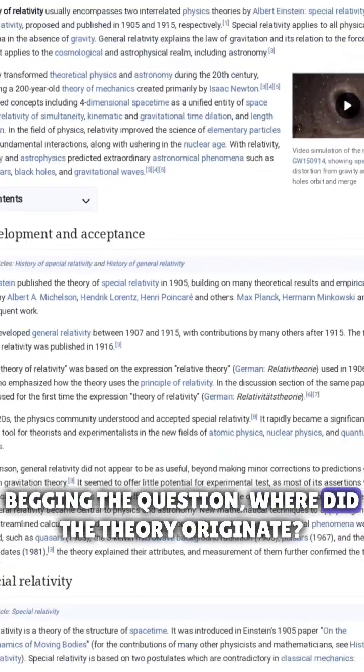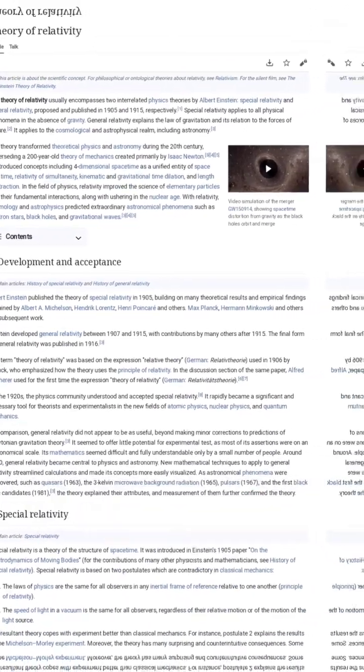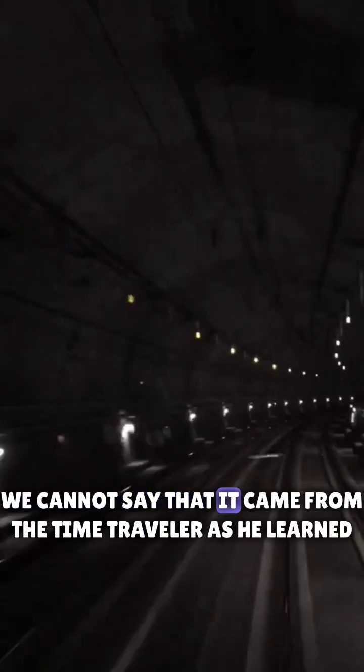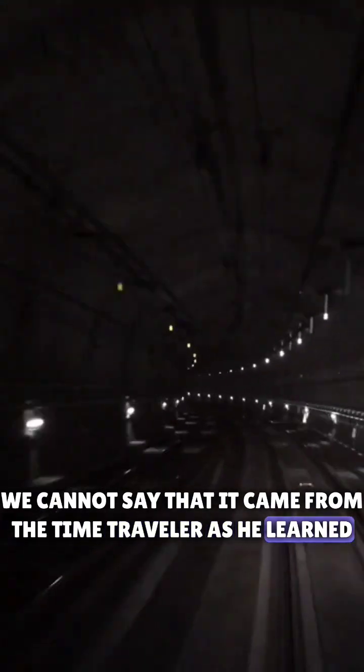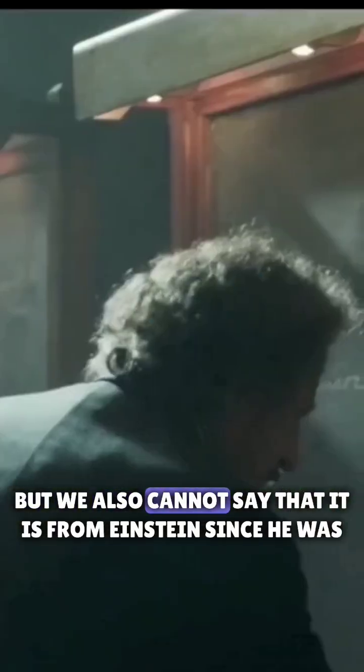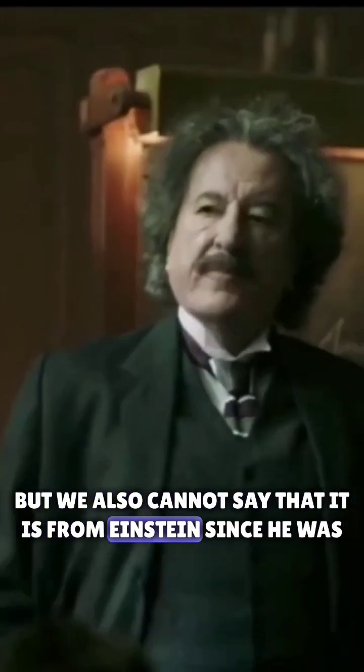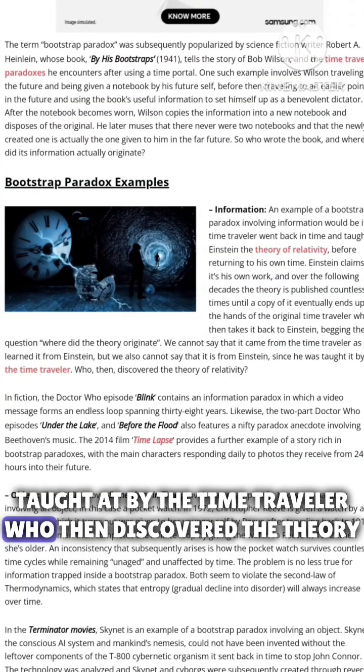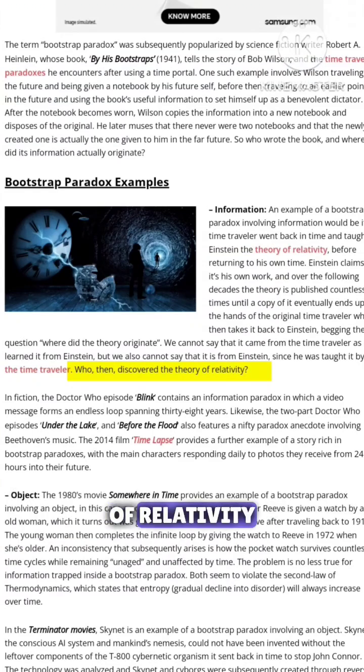Begging the question, where did the theory originate? We cannot say that it came from the time traveler, as he learned it from Einstein, but we also cannot say that it is from Einstein since he was taught it by the time traveler. Who then discovered the theory of relativity?